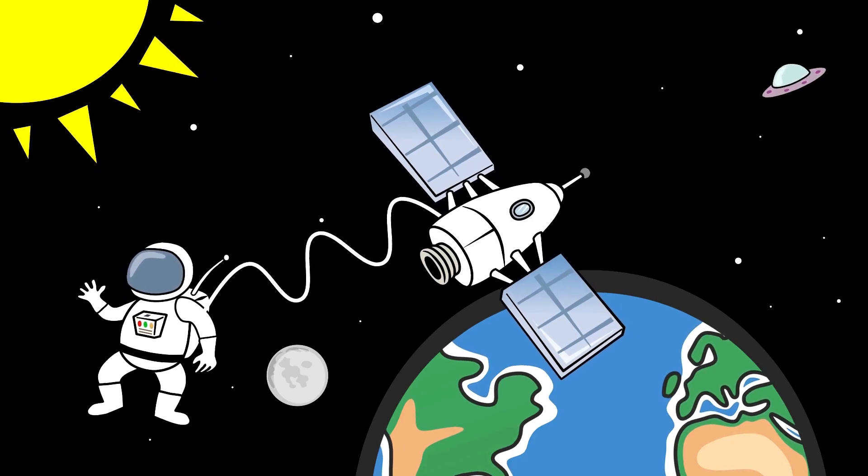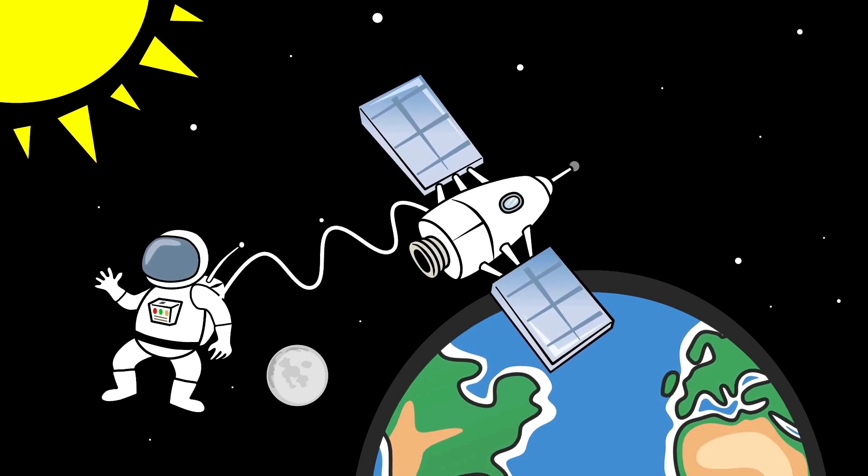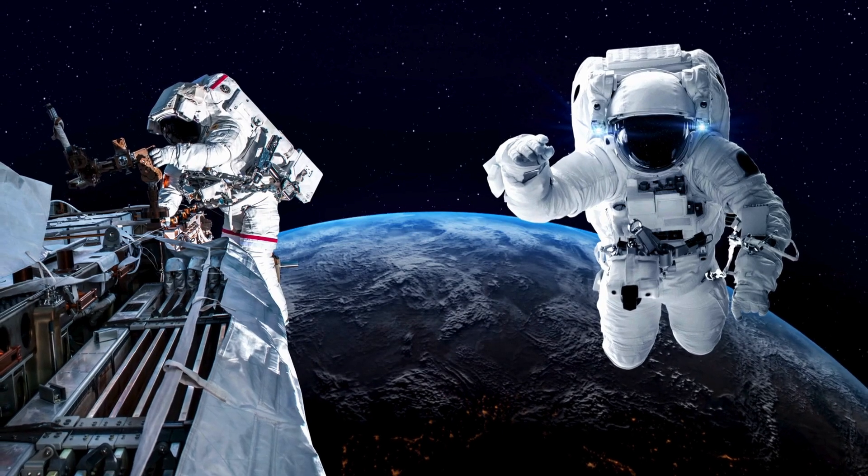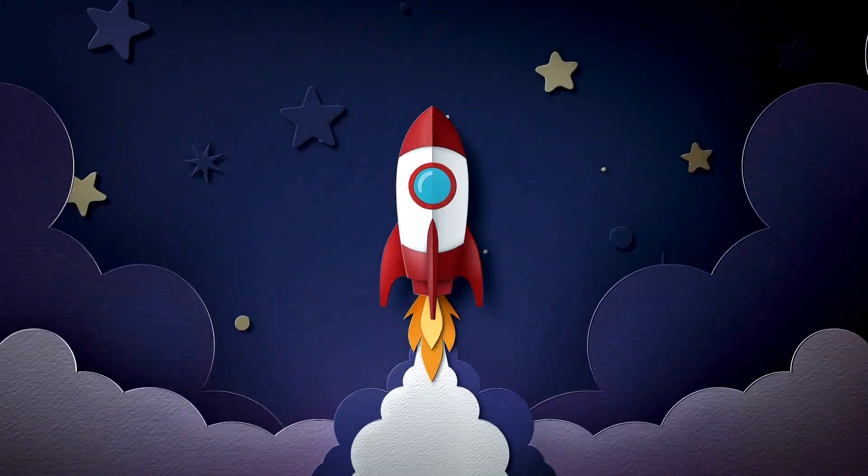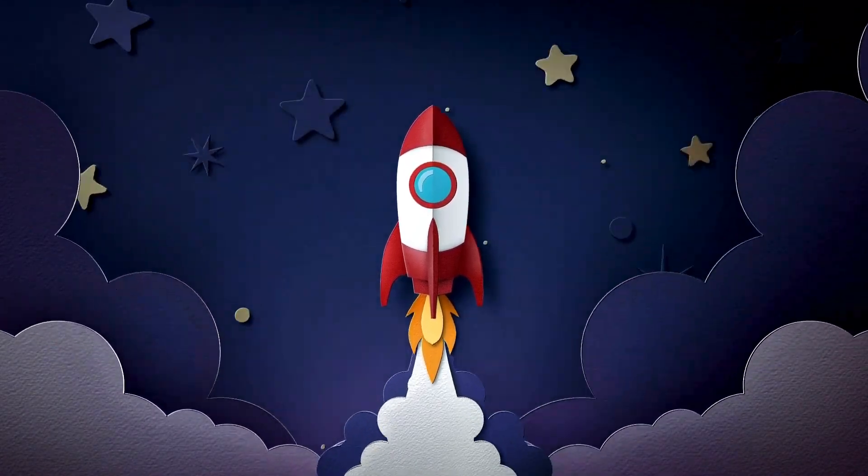Sometimes astronauts go outside their spaceship to fix things. That's called a spacewalk. And to reach space, they ride inside rockets that blast off with a big roar.